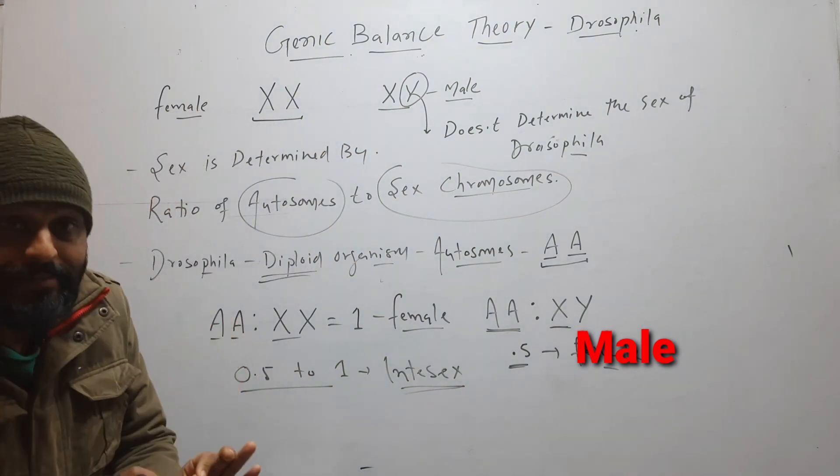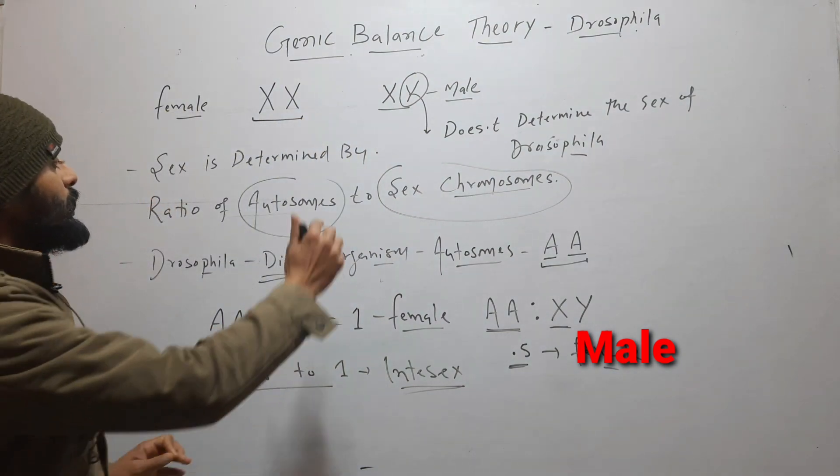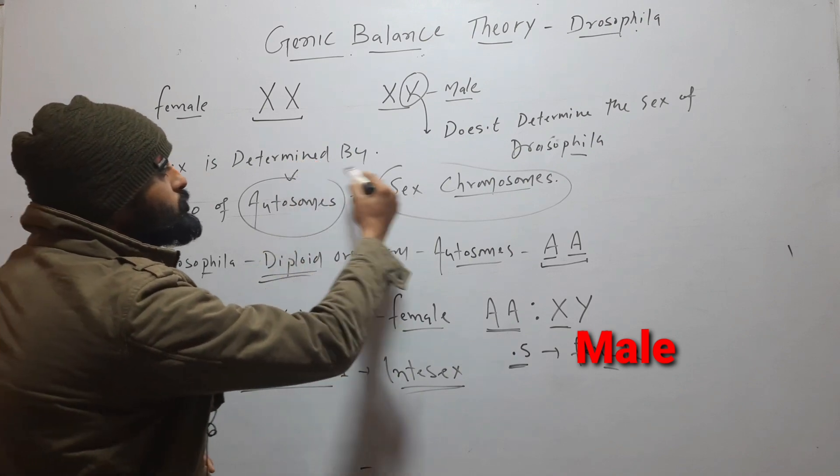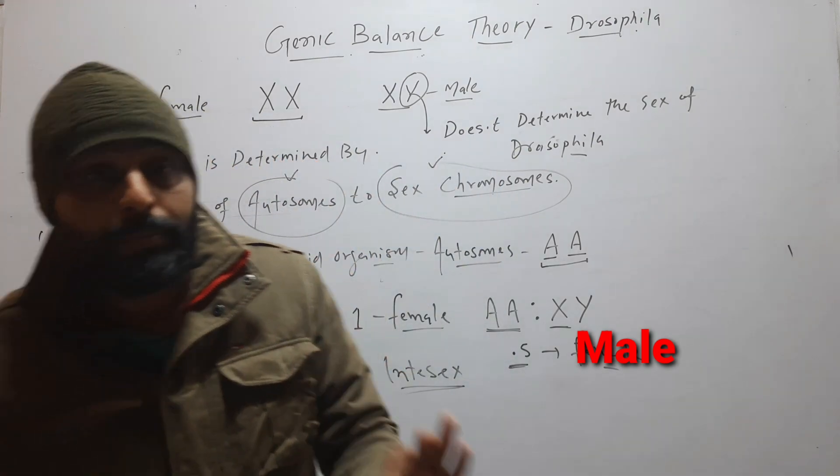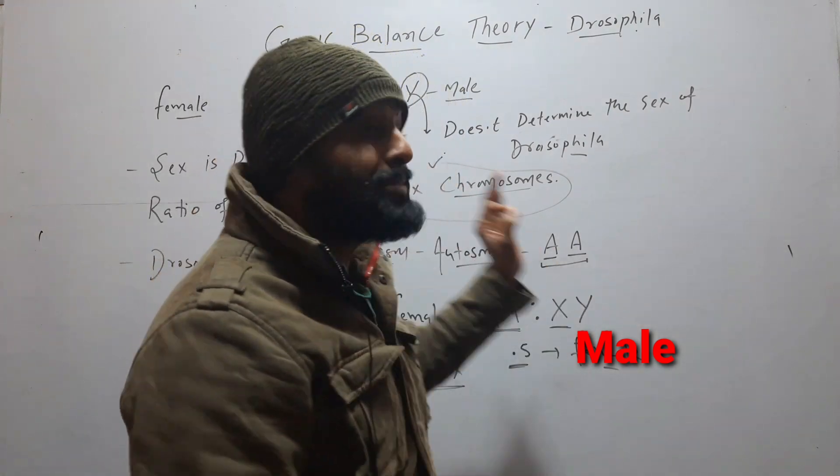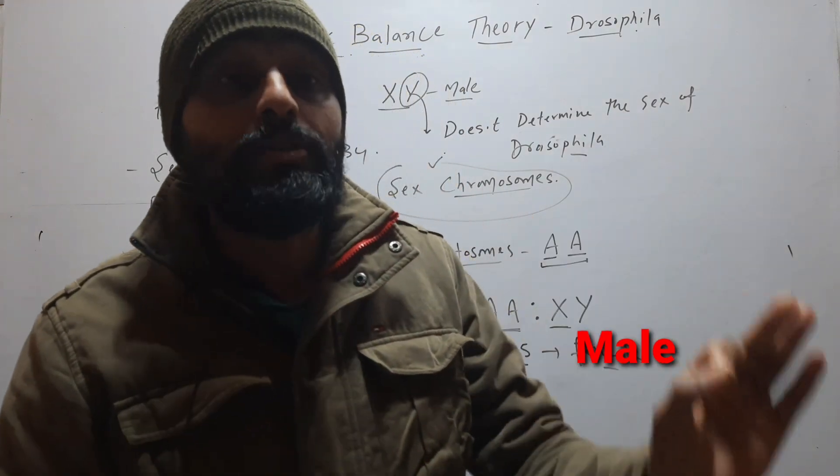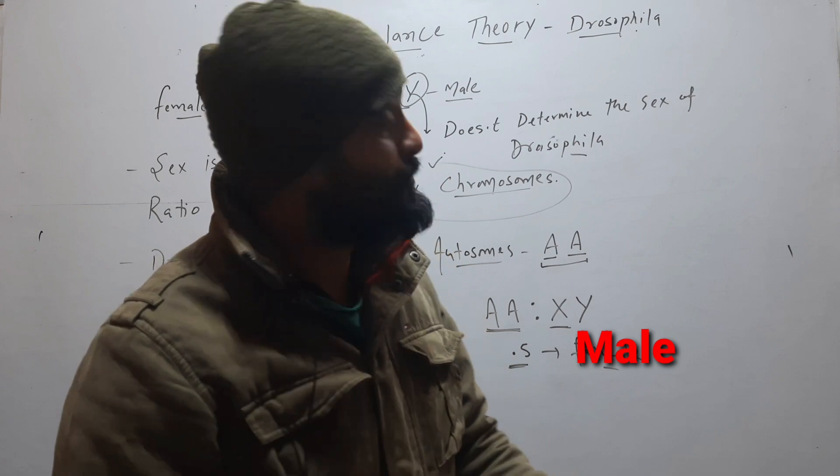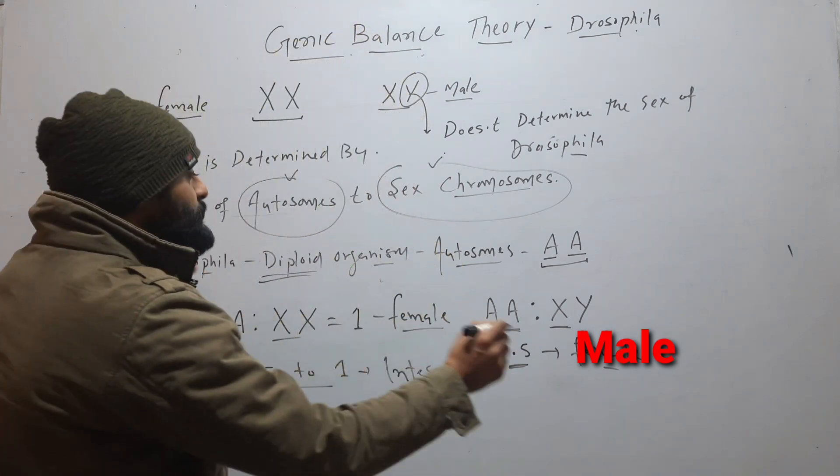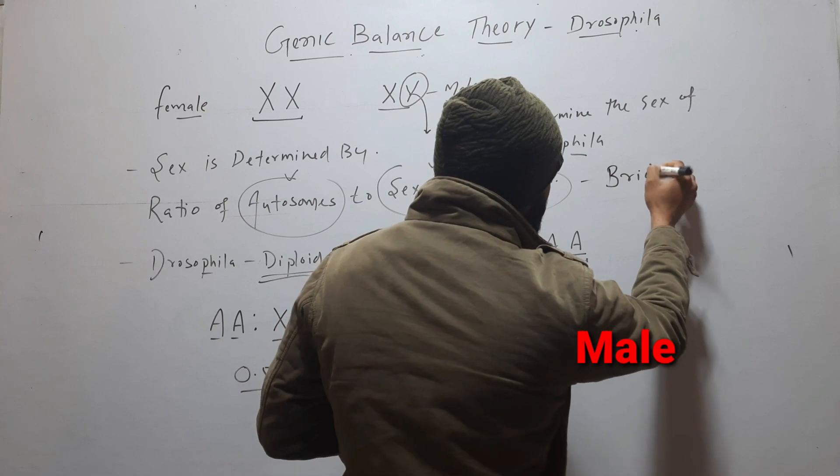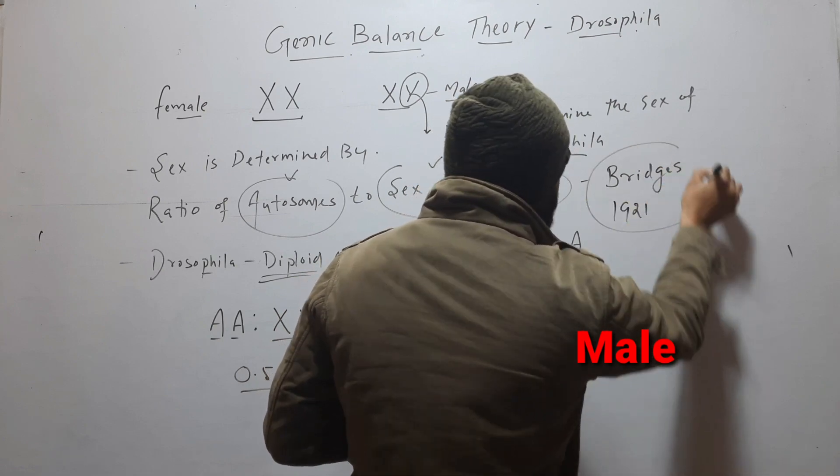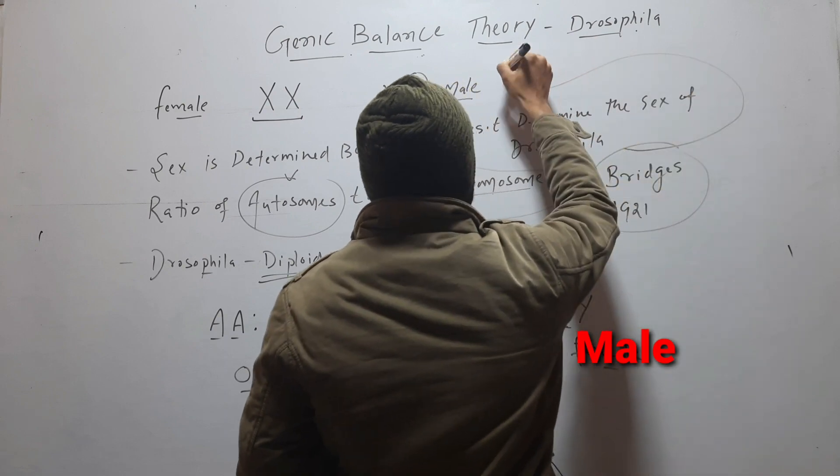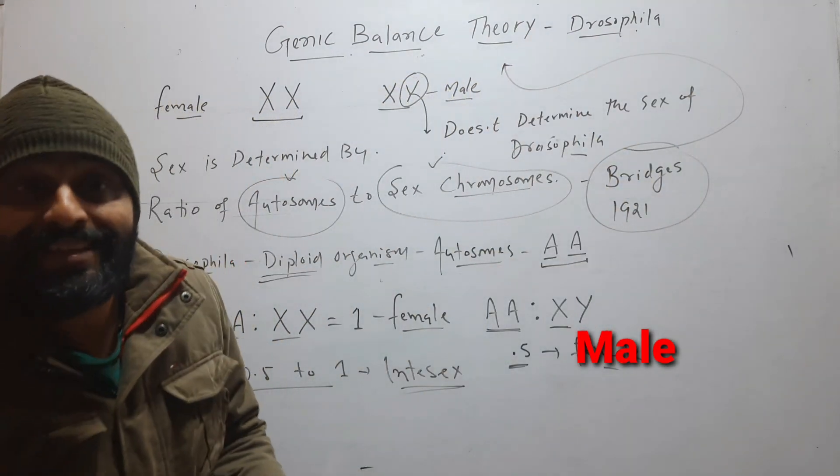Sex is determined by ratio of autosomes to sex chromosome. In case of Drosophila, Y chromosome does not play any role in sex determination. This phenomenon first discovered by Bridges in 1921, and he put forward the theory of genic balance.